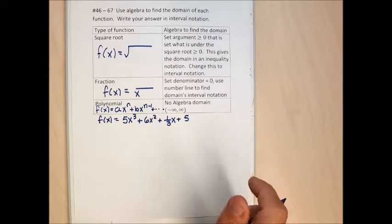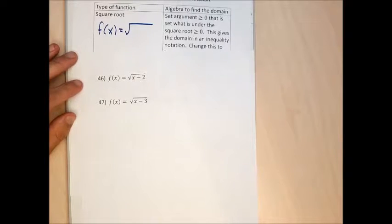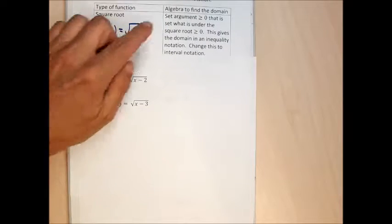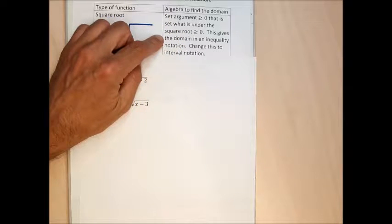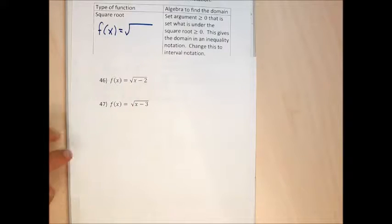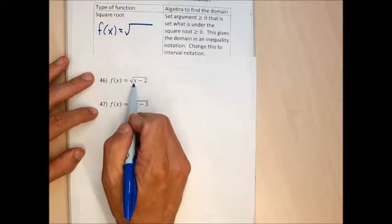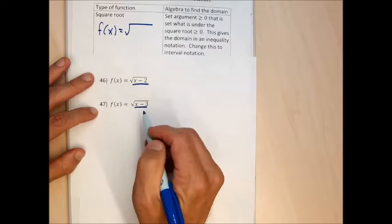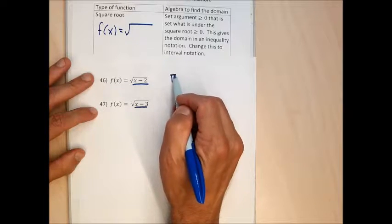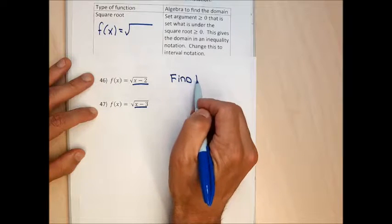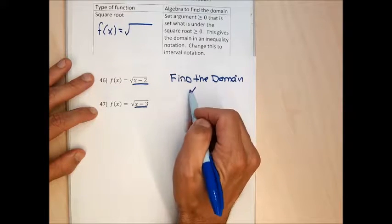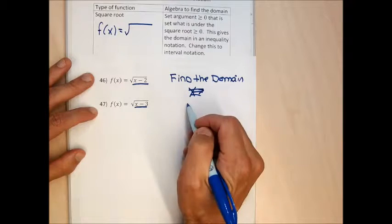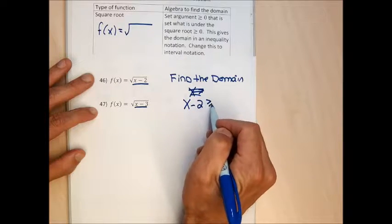We'll take them one at a time. For square root problems, the instruction to find the domain is to set the argument — what's under the square root — greater than or equal to zero. For problem 46, the algebra to find the domain is to set x minus 2 greater than or equal to zero and solve for x.